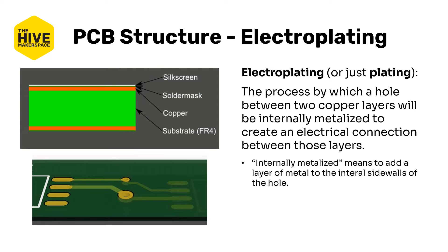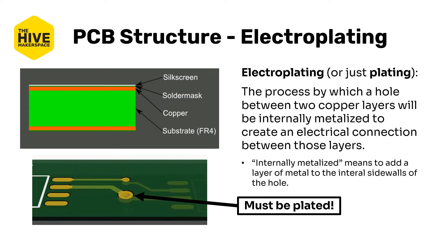These plated holes are usually quite small. Through hole components will also typically use plated holes. Some holes, such as mounting holes, may be left as unplated through holes. The important thing to know is that electroplating adds a thin layer of metal on the inside of those holes, and they must be plated. If you'd like to know more about the actual fabrication process, the Hive has a basic set of tools for hobbyist-level fabrication, or you can search online to learn the nitty-gritty of production-grade manufacturing processes.